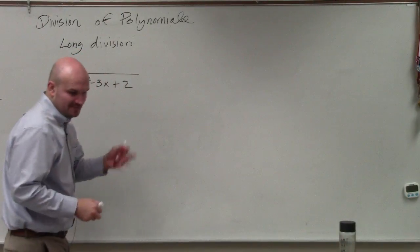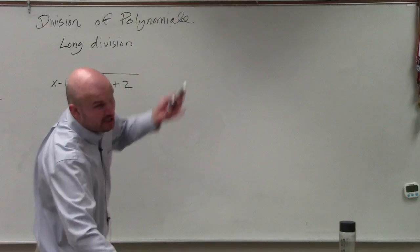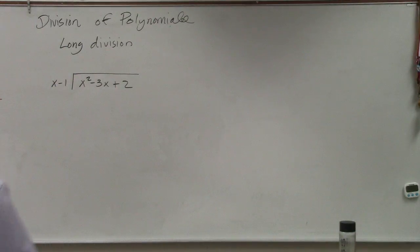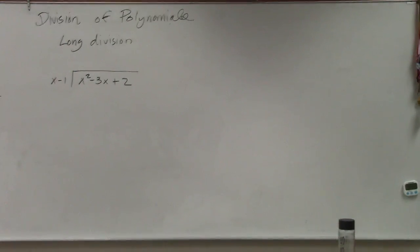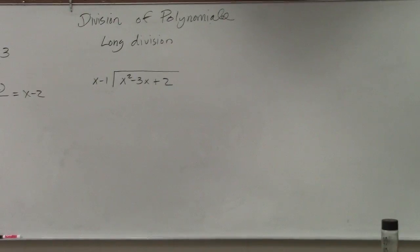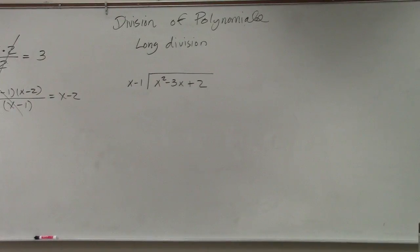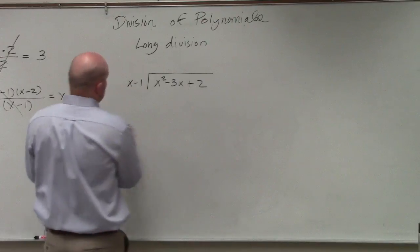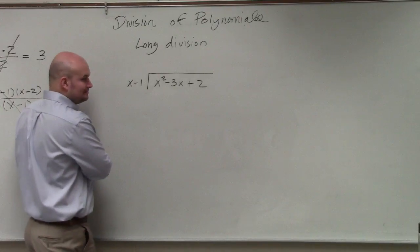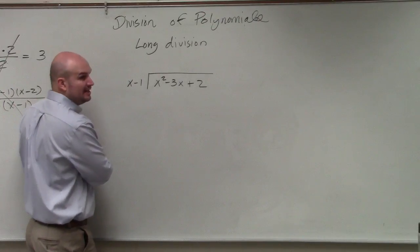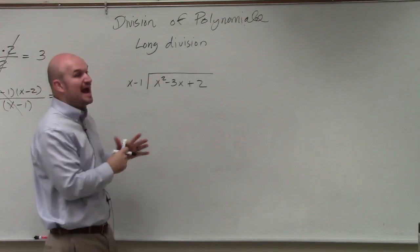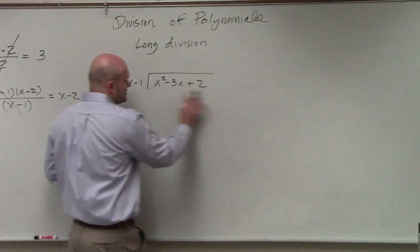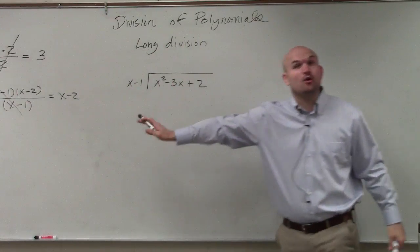So first thing you're going to want to do — I'm going to use some color coordination to help you follow along these steps. It is a step by step process that a lot of students get mixed up on. The first thing we want to make sure whenever we're doing long division is that our dividend and divisor are in descending order.